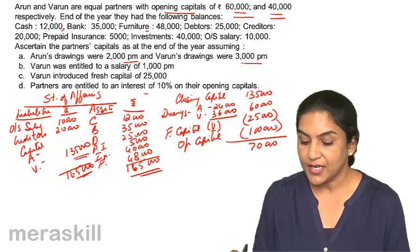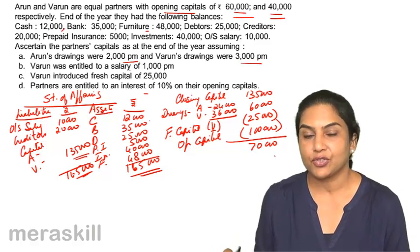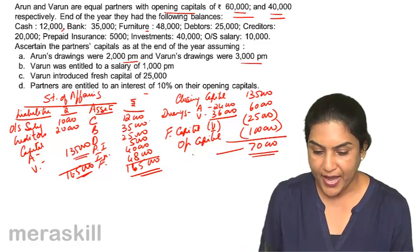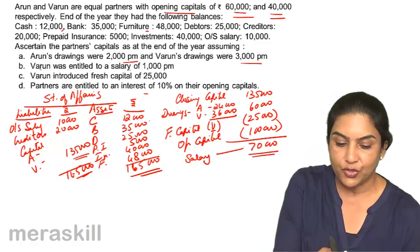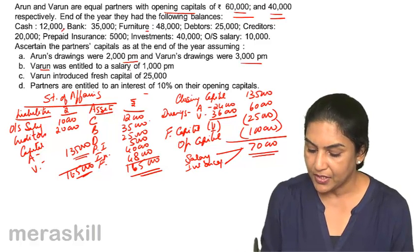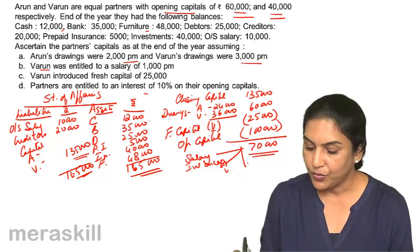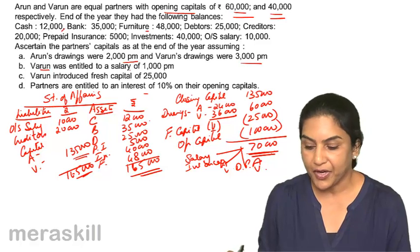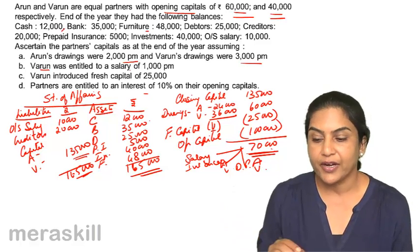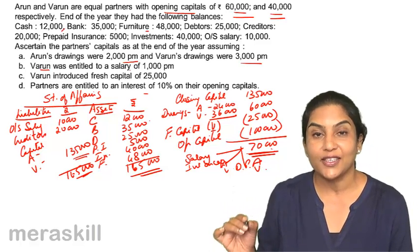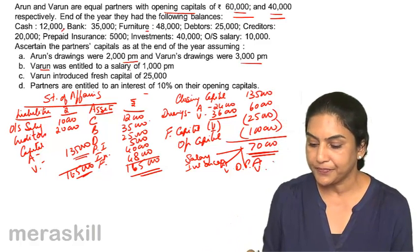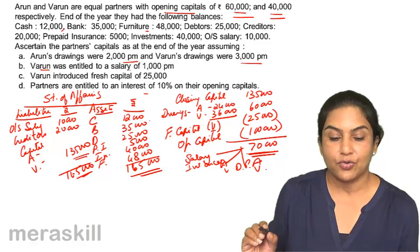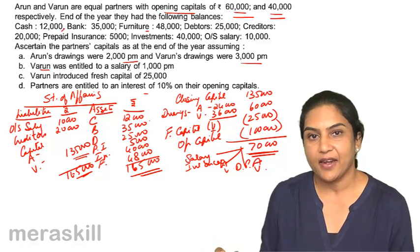The profit for the year is 70,000. Now, 70,000 is the total profit. How will this profit be distributed? Salary will be given to Varun, interest on capital to both Arun and Varun, and the balance — divisible profit — will be given again to Arun and Varun. So while I have got 70,000 profit, I cannot just distribute it in an equal ratio. First I have to see what are the terms of distribution.